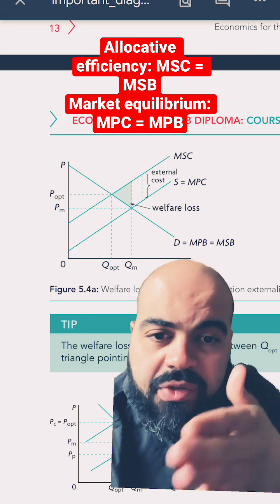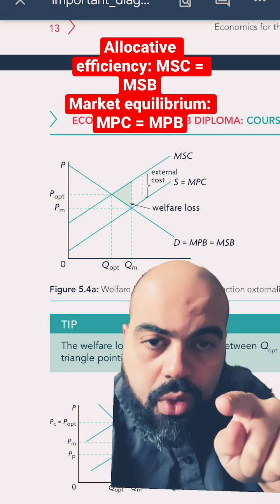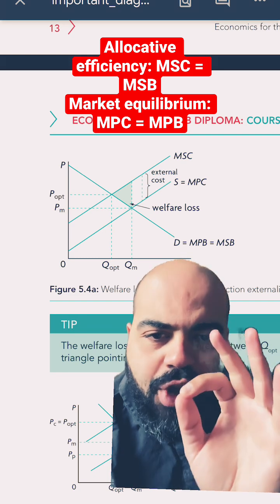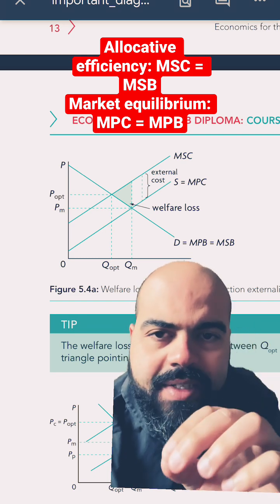The problem is the market is providing more than it should. QM, the market quantity, is greater than QOPT, the socially optimum or allocatively efficient quantity.